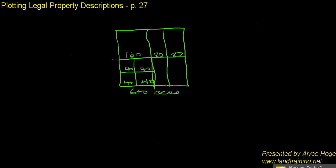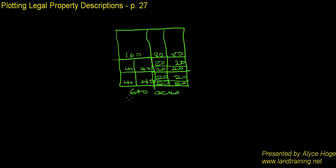If we take these quarter sections and break them down into 30-second sections, we're just going to divide these 40-acre sections in half, which is going to be 20 acres each. So that's the math behind it. No matter how far you break it down, you're going to be able to calculate the acreage because you know the whole section is 640 acres and a quarter section is going to be 160 acres. That's really the easy part.